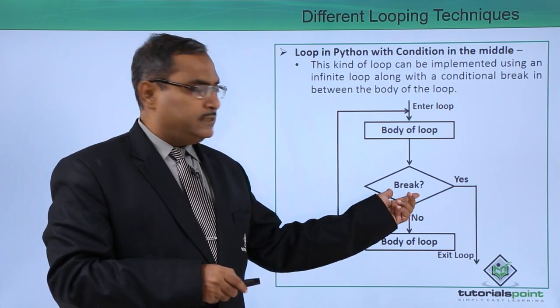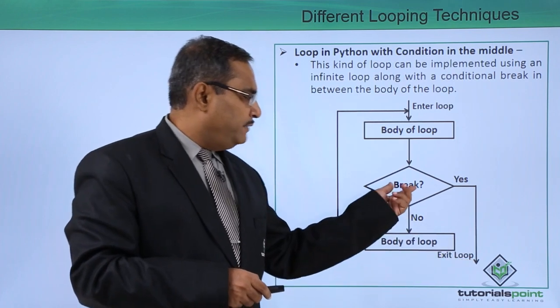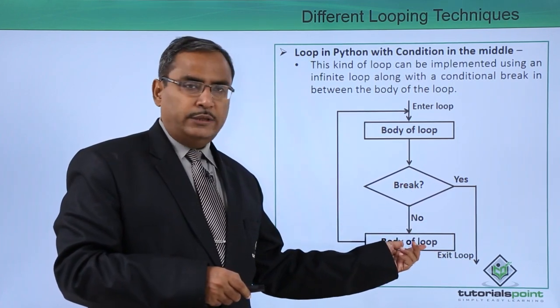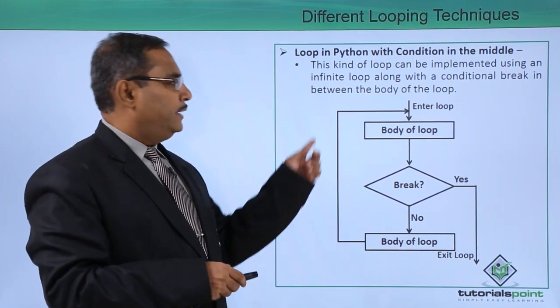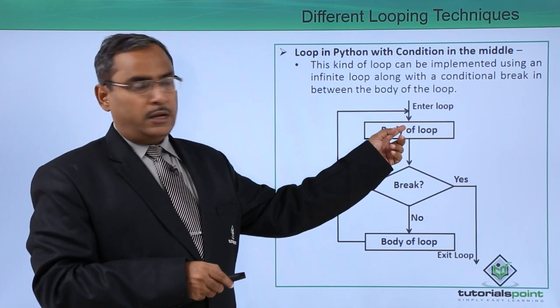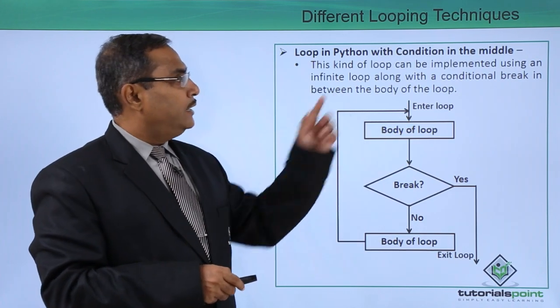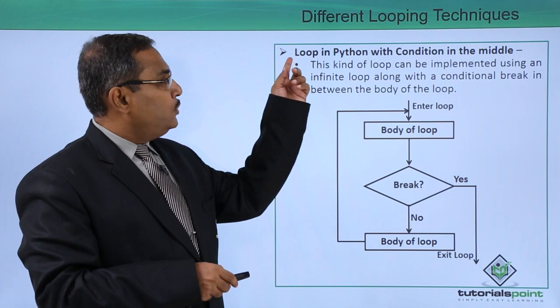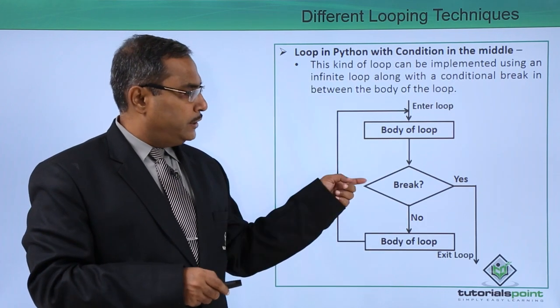If there is a break then it will come out, and if there is no break then it will continue with the loop and then again the control will come here and in this way the loop will get executed. There is a loop in the Python with condition in the middle.